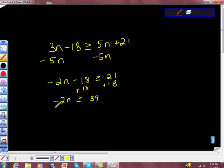Now, I'm going to divide. Look. So, now I'm going to multiply or divide. I'm going to divide by a negative number. Dividing by a negative number, we're going to get n is less than or equal to negative 39 halves.